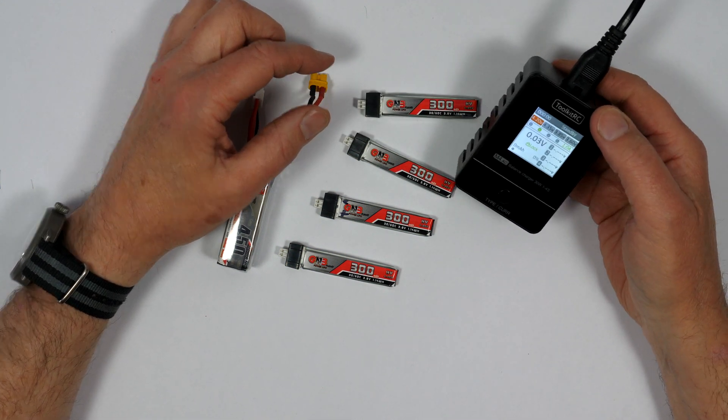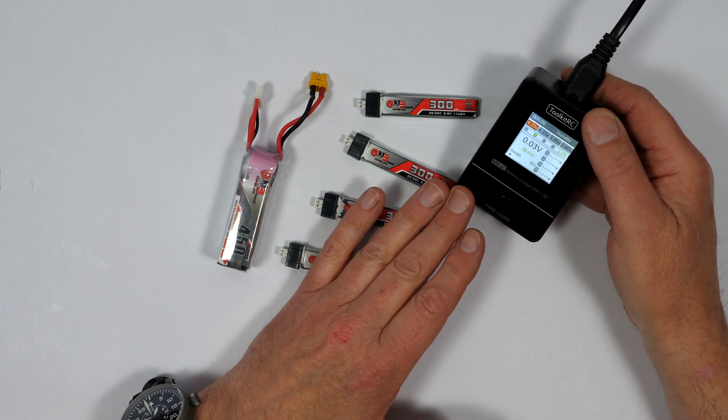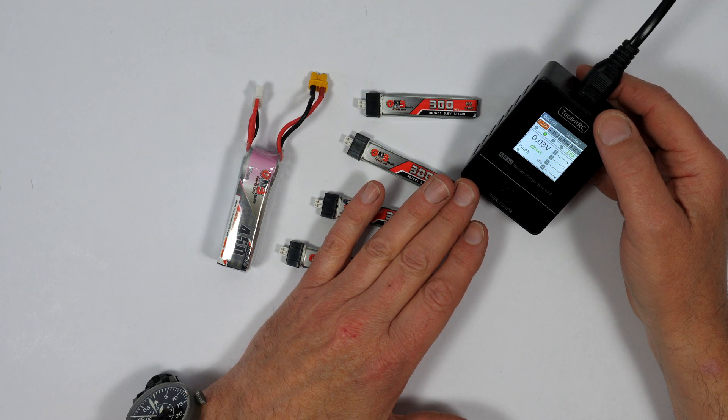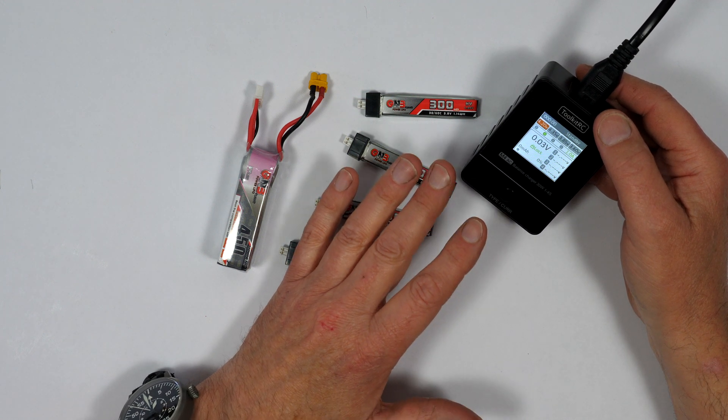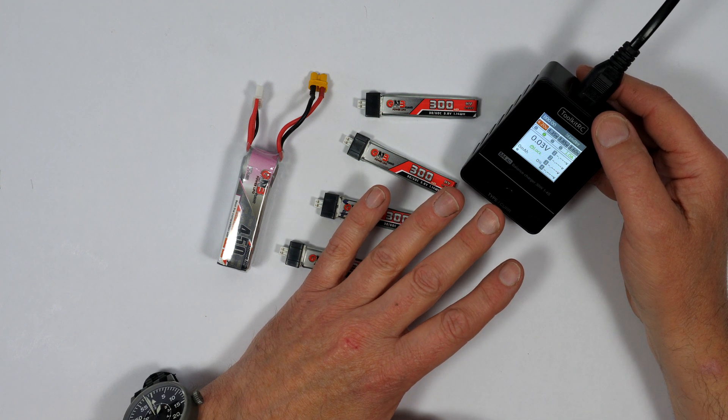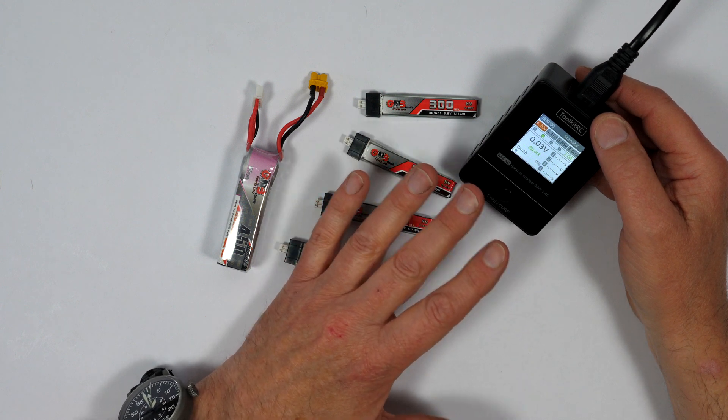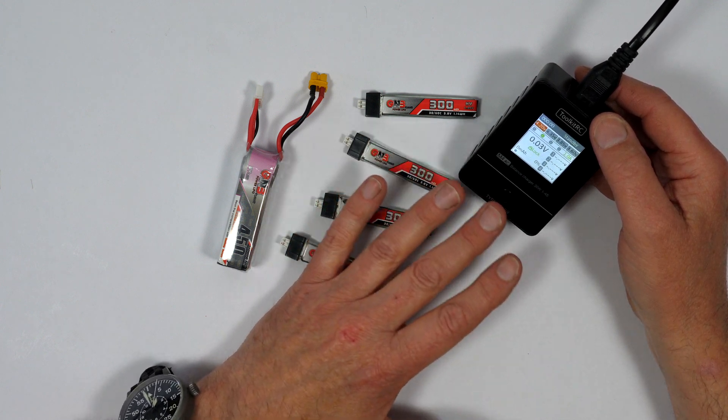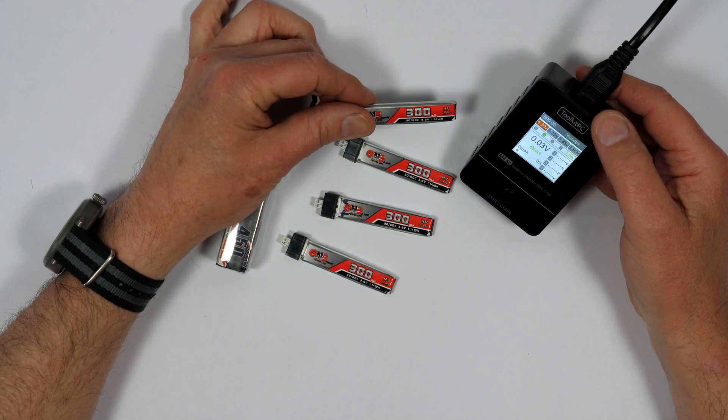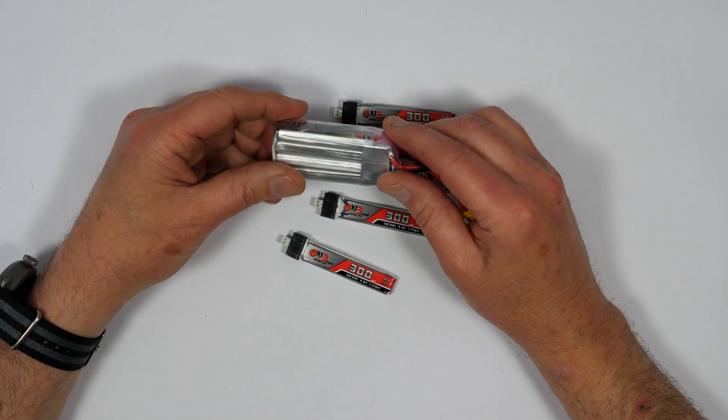Simple, cheap balanced chargers like this Toolkit RC-M4 have all sorts of charging modes and you can set the charge voltage and current to whatever you like. They do have a storage mode to charge the LiPo to the correct storage voltage.